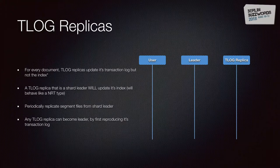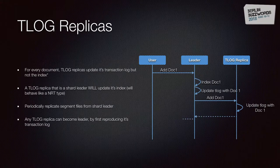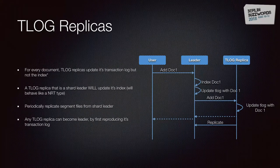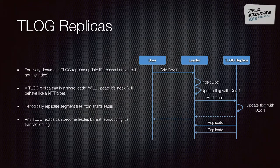The TLOG replica is one of the new types. It works very similarly to NRT, except that when a TLOG replica receives an update, it updates the transaction log but does not update the index. It responds to the leader that it has the document, but the data won't be available for search until the TLOG replica does a periodic replication from the leader. TLOG replicas do not support near real-time and do not support real-time gets.